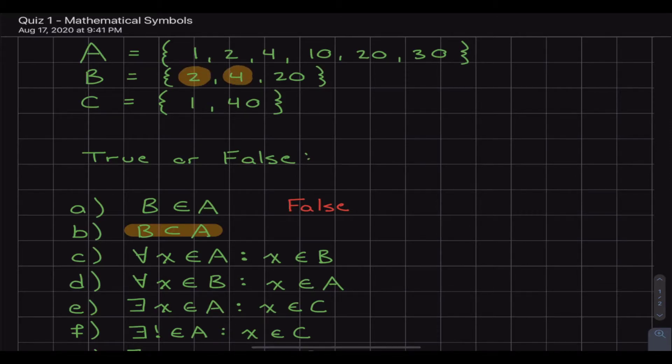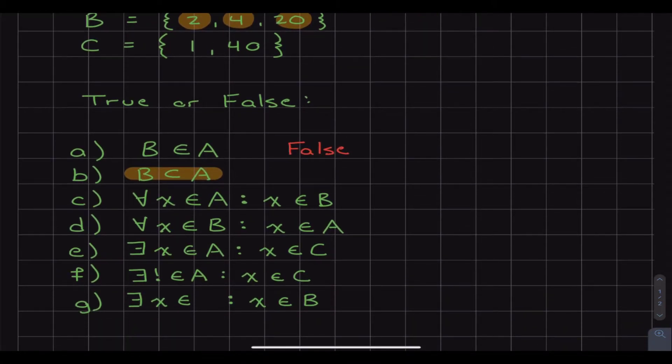And if we look at B, we got two, we have four, and we have 20. And then if we look at A, we have two, we have four, and we have 20. So yes, all the numbers that we see in B are also found in A. So B is actually a subset of A. So the second statement right here is absolutely true.